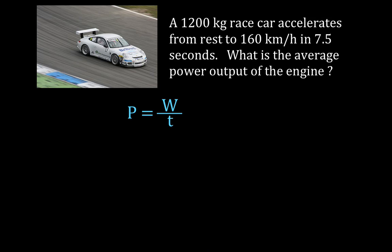Power is work divided by time, and that is the force times the distance divided by the time. I purposely put the T under the D because you can see that can be simplified — force times distance divided by time is the velocity. So power equals force times velocity. We're given the final velocity.